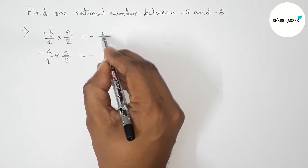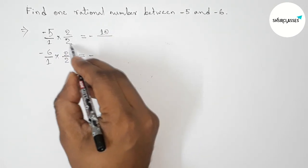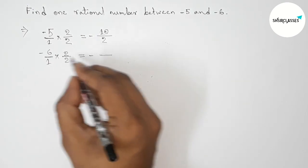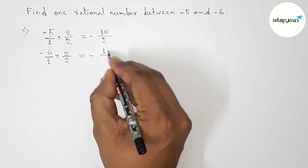So this is minus 5 times 2 is minus 10, and 1 times 2 is 2. Now here, 6 times 2 is 12, and 1 times 2 is 2.